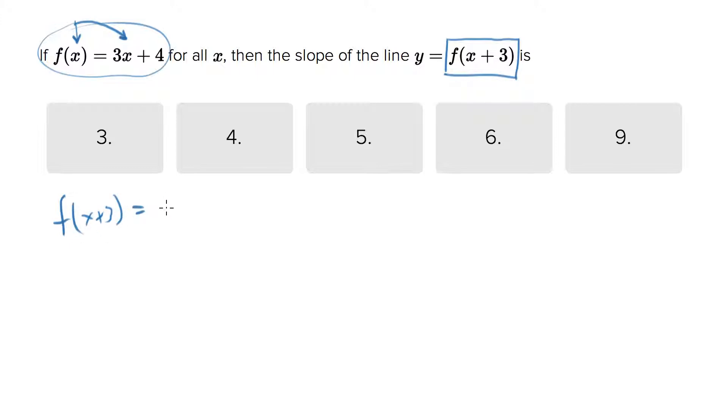We get 3(x+3) + 4. Now they're saying let's call that y and make a line in the xy coordinate system from that and give us the slope of it.